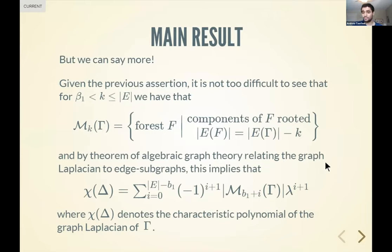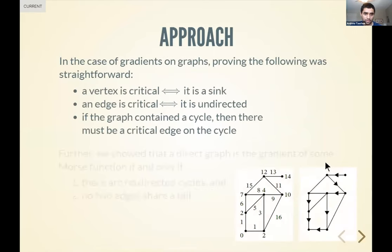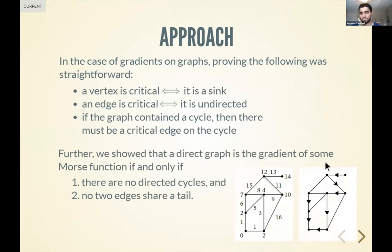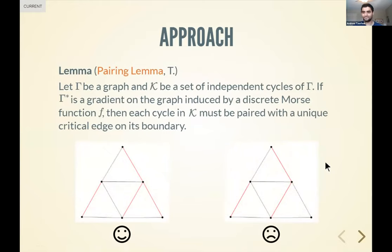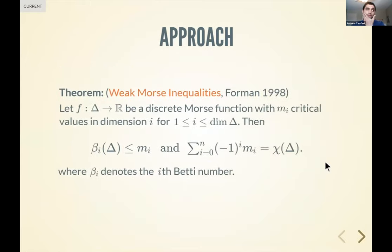Audience member: For the critical points, is there a way of associating an index to them? Speaker: Yes — the index associated to critical cells in discrete Morse theory is just the dimension of the cell, whereas in smooth Morse theory it's the number of negative signs in local coordinates. Audience member: Do you have a reference for the topology of the Morse complex — the simplicial complex you mentioned? Speaker: Yes, there's a paper by someone named Chari called 'Complexes of Discrete Morse Functions' — I can type that in the chat afterwards.